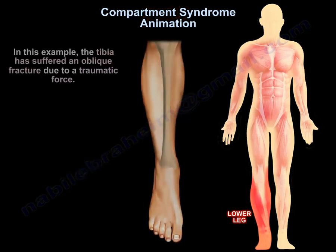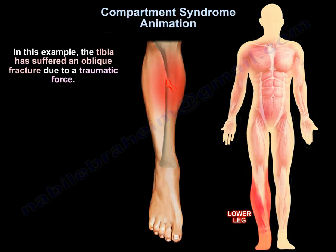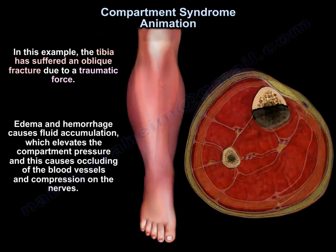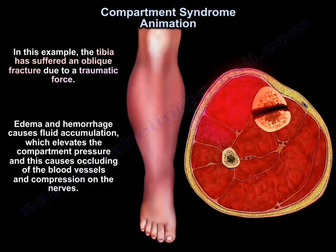In this example, the tibia has suffered an oblique fracture due to traumatic force. Edema and hemorrhage cause fluid accumulation, which elevates the compartment pressure, and this causes occluding of the blood vessels and compression on the nerves.